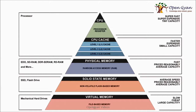On top of this pyramid, we have the processor registers — the CPU process registers — which are super fast and super expensive, but tiny in capacity. They are used by the CPU to perform load and store operations and current day normal operations.